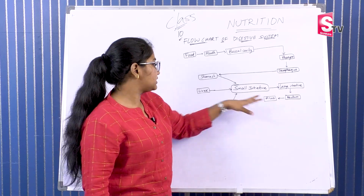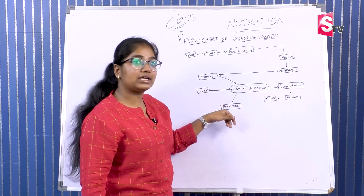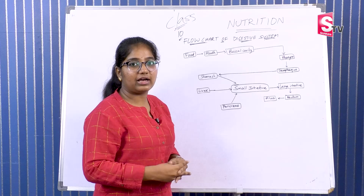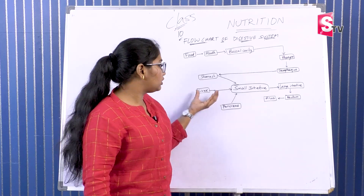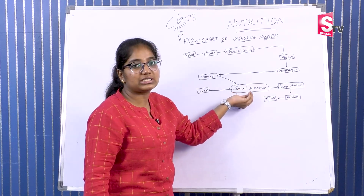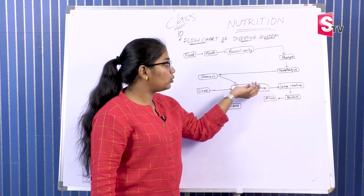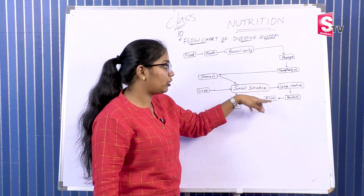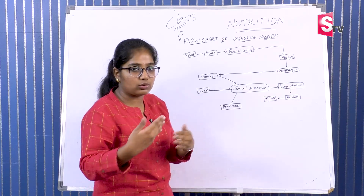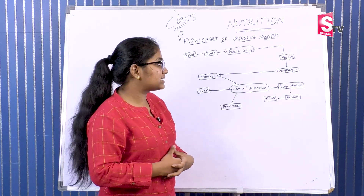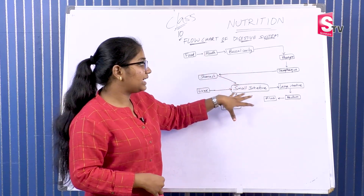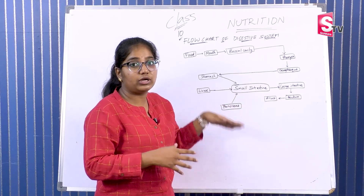The liver and pancreas secrete into the small intestine. The last end product is compulsory for the digestive system. When the excretory process works properly, we have no diseases.